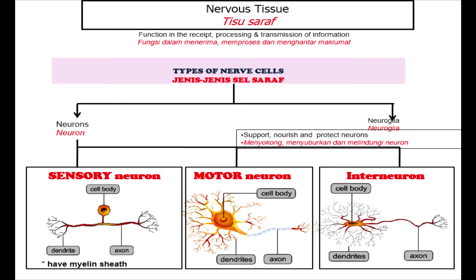Nervous tissue functions in receiving, processing, and transmission of information. There are two types of nerve cells: the first is neuron, and the second is neuroglia. The function of neuroglia is to support, nourish, and protect neurons. There are three types of neuron: sensory neuron, motor neuron, and interneuron.